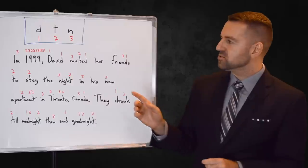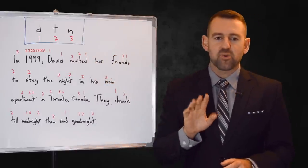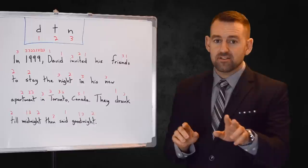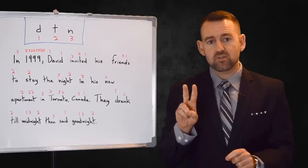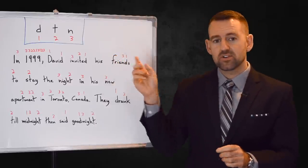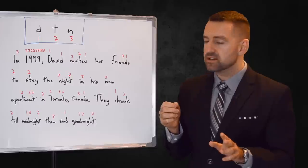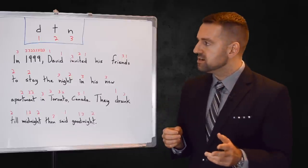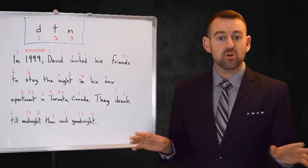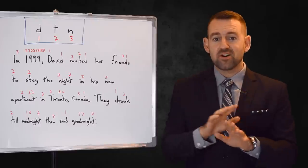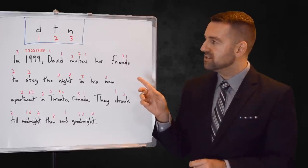In English we have these three sounds: D, T, and N. Now the problem is that you, if you're an Indian or Pakistani or whatever, you have two sounds for each of these sounds. You have a front sound and a back sound. Like this: D and D, T and T, N and N. In English we don't have any of those sounds. Those sounds don't exist in English. In English we only have D, T, and N.